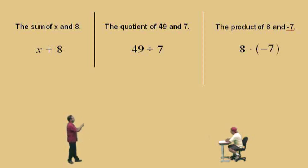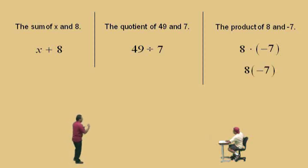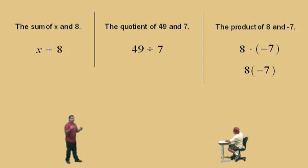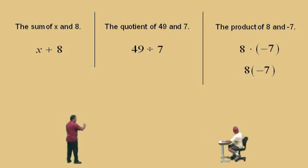Now Charlie, do we need that dot in front of the parentheses? No. Remember, if you put a number — that 8 — outside the parentheses with no operation indicated, it implies multiplication. So there are two ways to write the math statement for the product of 8 and negative 7. Either way is fine.